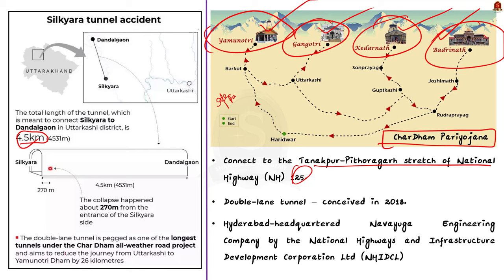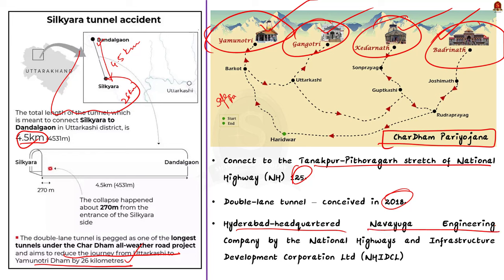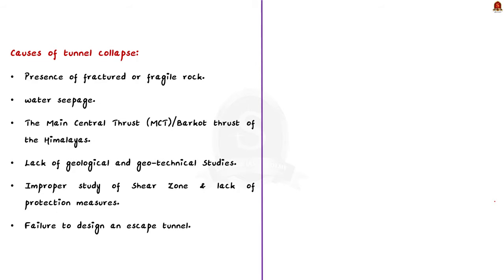The tunnel aims to reduce the journey from Uttarkashi to Yamunotri Dham by 26 kilometers. The project was conceived in 2018, and construction was tendered to Hyderabad-headquartered Navayuga Engineering Company by the National Highways and Infrastructure Development Corporation Limited (NHIDCL), which is a fully owned company of the Ministry of Road Transport and Highways.